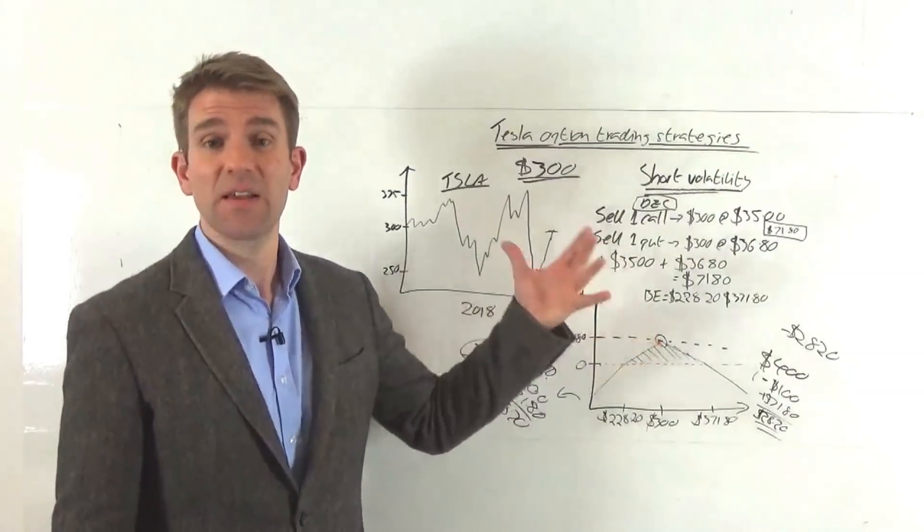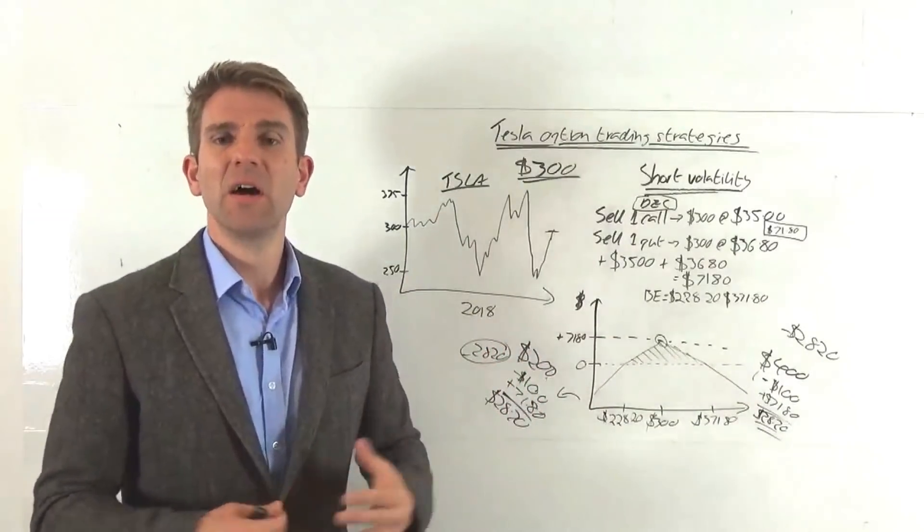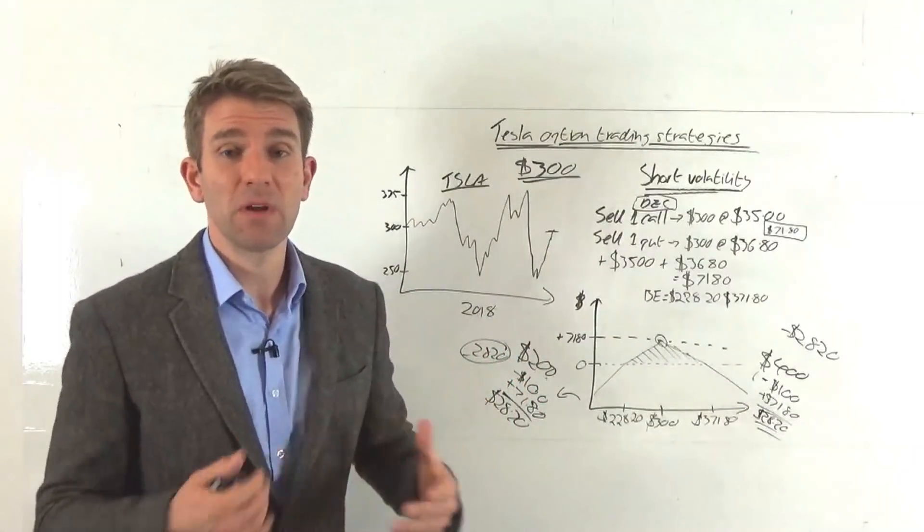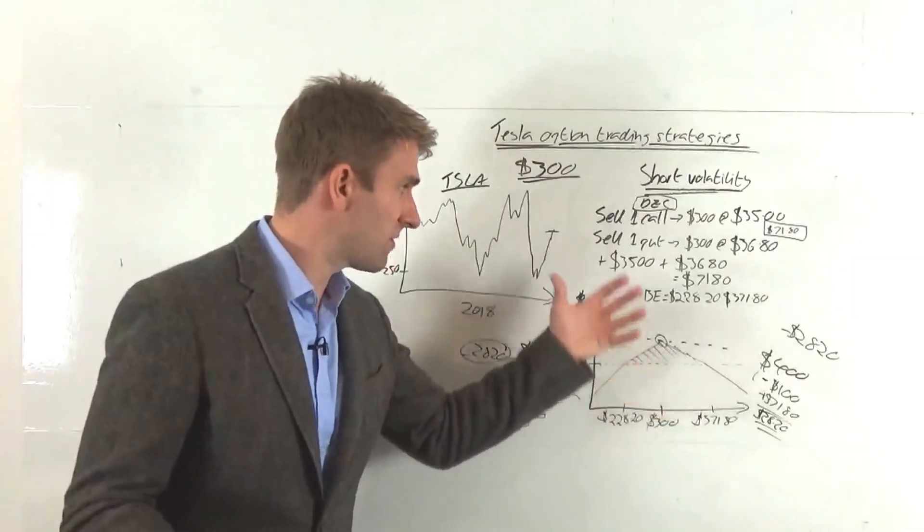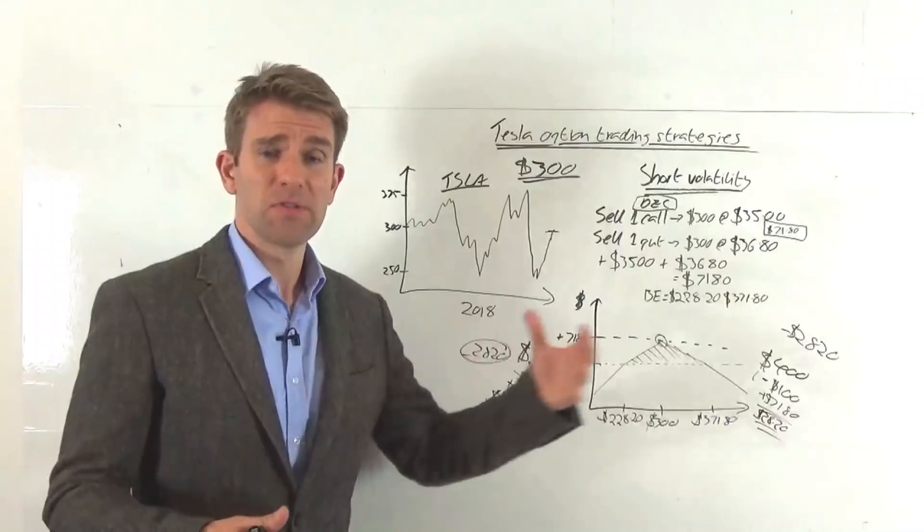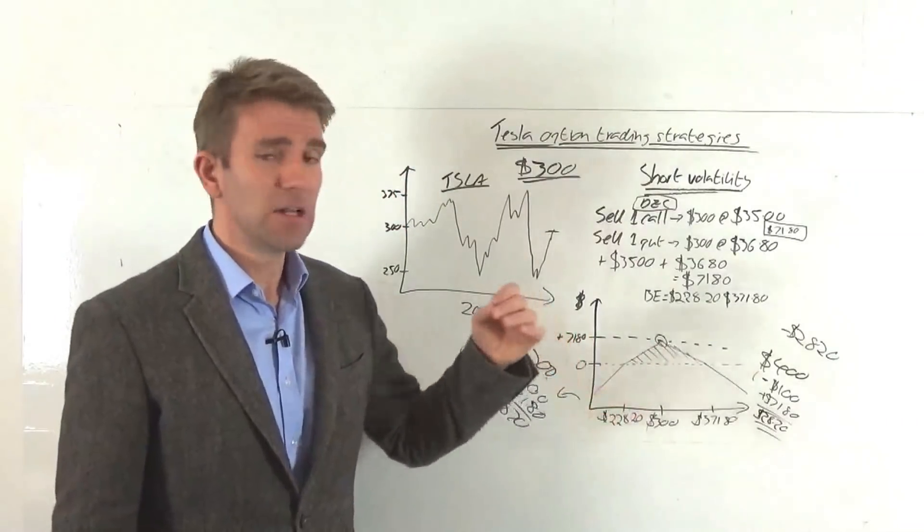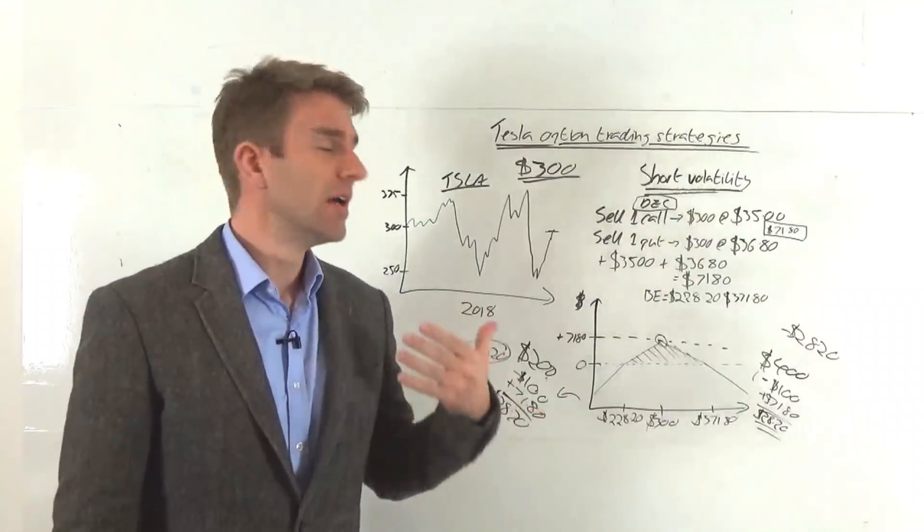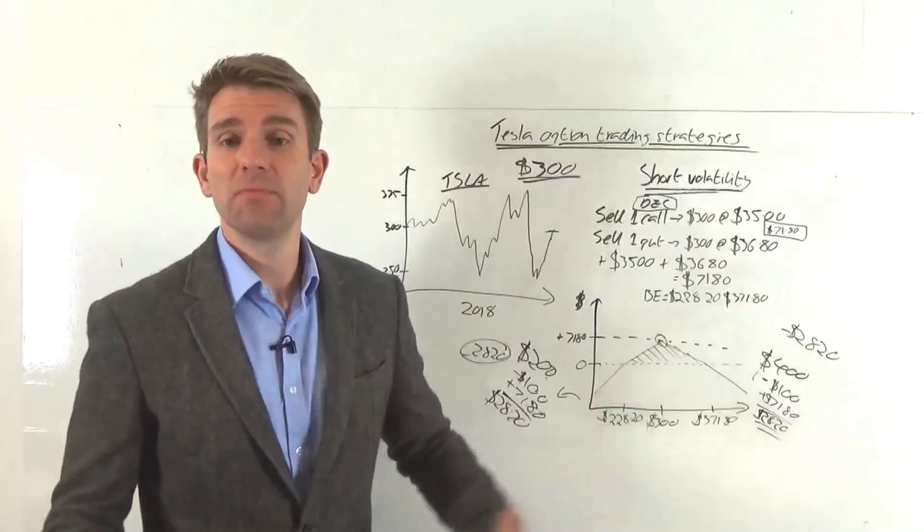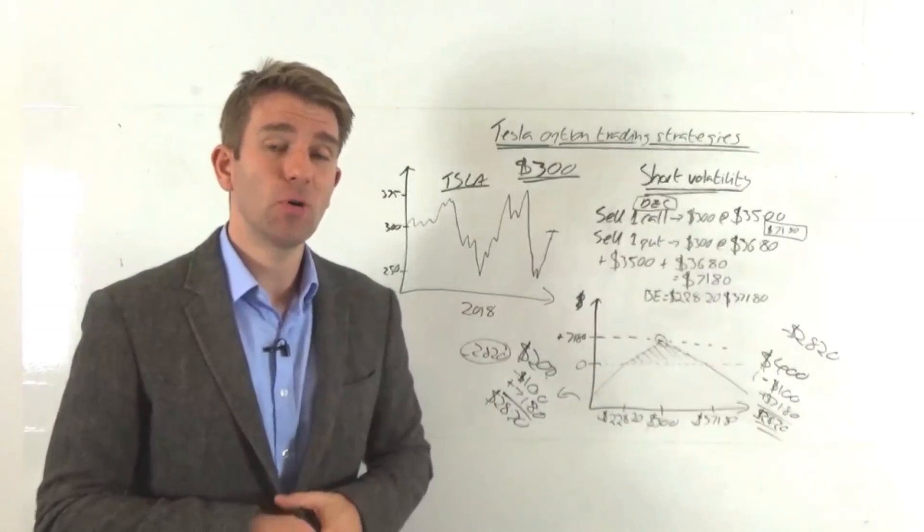So it's something you could potentially do if you wanted to take advantage of the fact that options are highly priced. That's not just for Tesla, that's for anything. If you just want to sell volatility, you think people are getting crazy here, I just think we're not going to do anything. That's my thesis. As long as you're aware of the risks of this, like I said, selling that call option and selling the put option obviously can go to zero. But even if it goes to $1, it's still going to be a hefty loss. As long as you understand the concept of that extreme risk, it might be something to consider as part of a trading strategy for a specific stock or commodity.